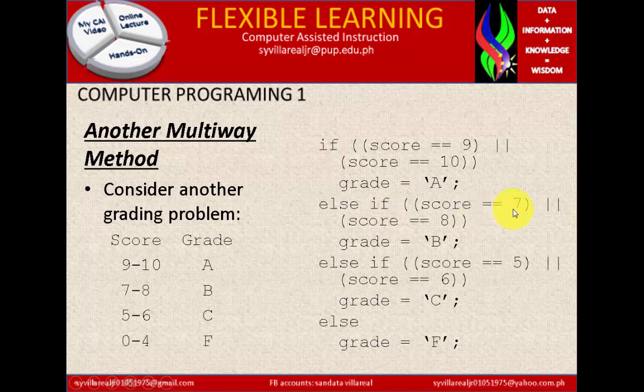If score is exactly equal to 7, or score is exactly equal to 8, then grade B. Else if score is exactly equal to 5, or score is exactly equal to 6, grade C. Else, grade F. So, this is the last.